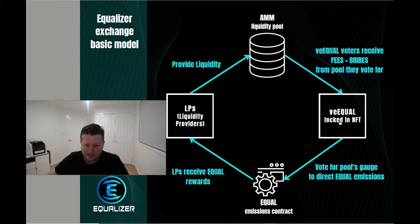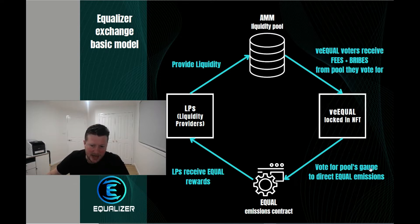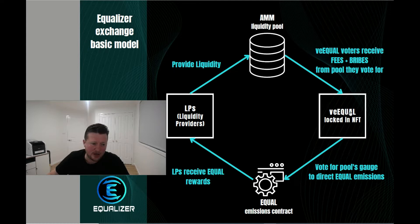So to start off, you've got VE Equal, which is your lock token. This is the token that you lock into an NFT, and that Vote Escrow or VE NFT has a up to 26-week lock. Based on how long you lock it for is how much voting power you get, which as you can see here, you vote to the Equal Emissions contract and then the LPs receive the rewards in Equal that are being voted by these NFTs. So you actually control the power to push these Equal emissions to the LPs.